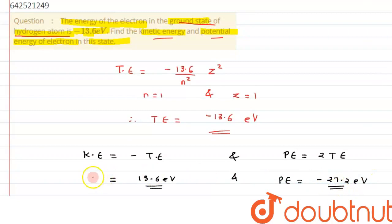This is the potential energy we are getting and this is the kinetic energy we are getting in the ground state of hydrogen atom. I hope you have understood the concept and thank you for watching.